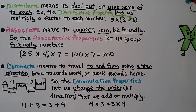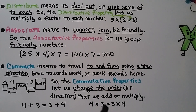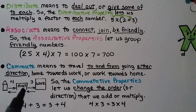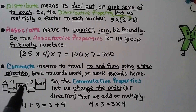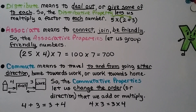The word commute means to travel to and from, going either direction — home towards work or work towards home. So the commutative properties let us change the order or direction that we add or multiply. 4 plus 3 equals 3 plus 4; 4 times 3 equals 3 times 4. It's like driving from home, getting gas, then going to work. If that's 4 miles and that's 3 miles, the distance is 7 miles — and if you're at work and drive 3 miles to get gas and then 4 miles home, it's still 7 miles. It didn't matter which direction we went.